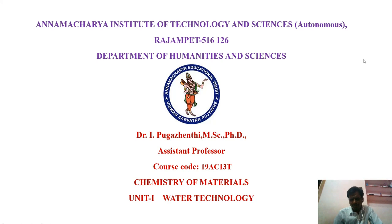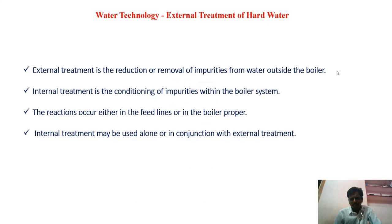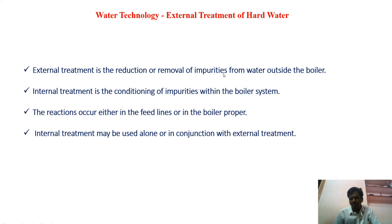In this session we have to discuss about external treatment of water, that means the ion exchange process. We are using water in boilers to generate steam. In this process, there are lot of chances to form scale and sludge on the surface if that water contains calcium and magnesium ions. So we have to remove those calcium and magnesium ions before feeding into the boiler. That process is called external treatment.